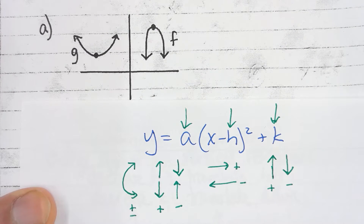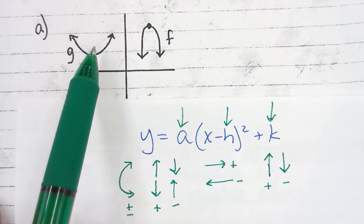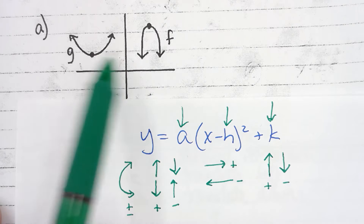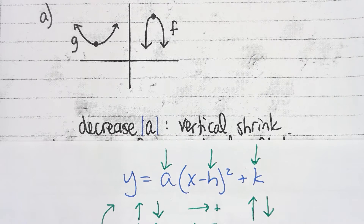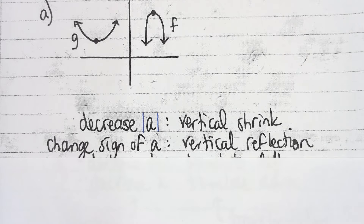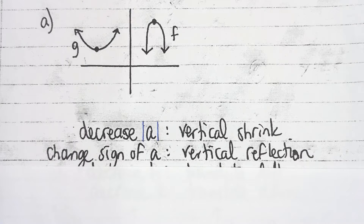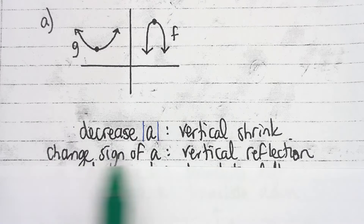Going from f to g, we can see two things happening with a. We had to make it wider, which means we've decreased the absolute value of a. We've also had to change the direction — f was going down and g is opening upward. So we've done two things: decreased the absolute value of a, which is a vertical shrink, and changed the sign of a, which is a vertical reflection. I'll always do this in order of a, h, and k.